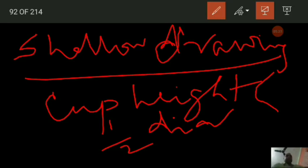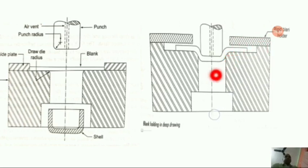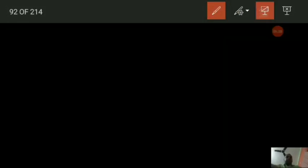For drawing deeper cups, it is necessary to make specific provisions to constrain the metal in order to prevent excess wrinkling of the edges. To avoid wrinkling, a rigid blank holder is normally provided on all deep drawing dies.